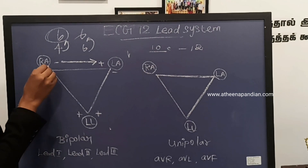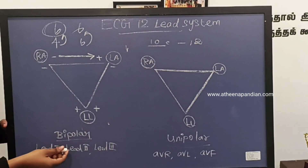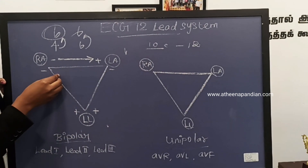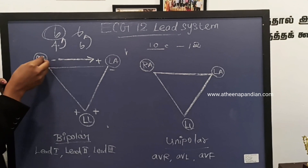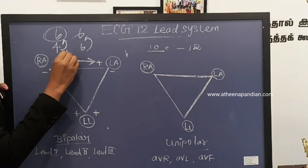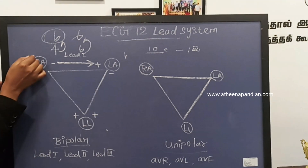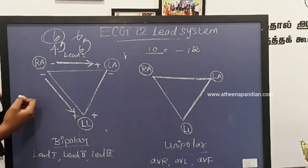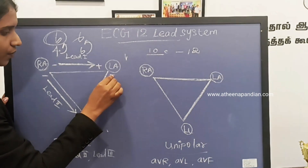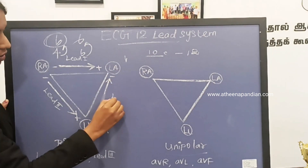This is the Einthoven's triangle. I am going to explain about bipolar and unipolar limb electrodes. Bipolar: this is the right arm, left arm, and left leg. The potential difference is measured between the right arm and the left arm — negative pole to positive pole — and this is Lead 1. Lead 2 is measured from right arm to left leg, positive to negative.